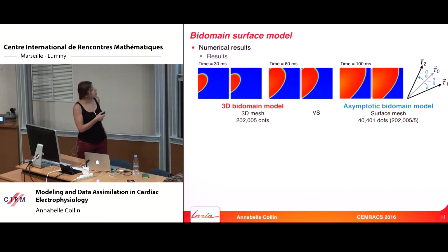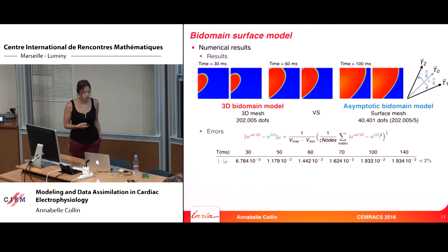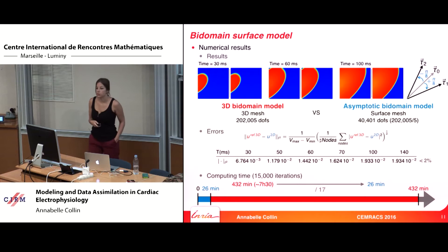Here is the first simulation. On the left, you have the 3D bidomain model; on the right, the asymptotic bidomain surface model, with three snapshots. We cannot see a difference between both. Looking at the L2 error, it is inferior to 2%, which is a very good result. In terms of computing times, the ratio is very important, meaning this first test validates the strategy.